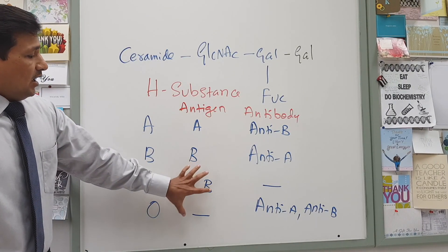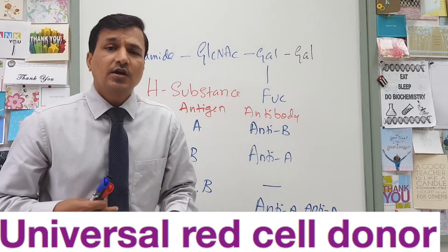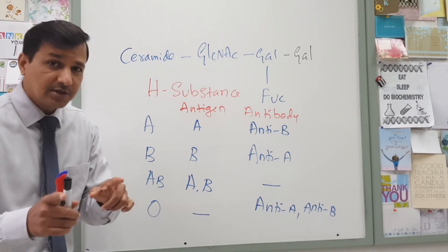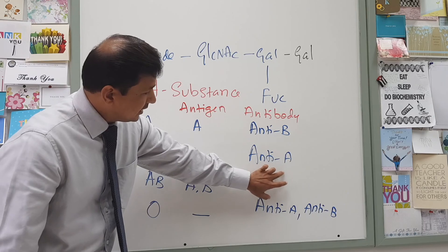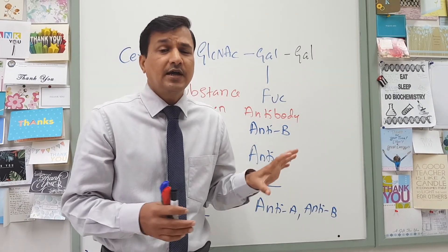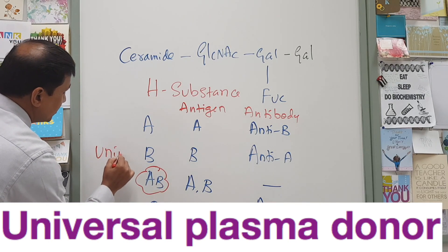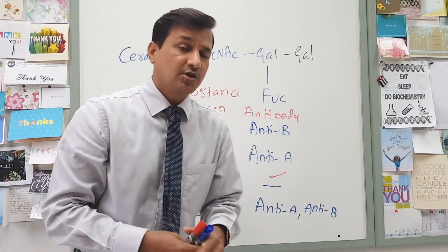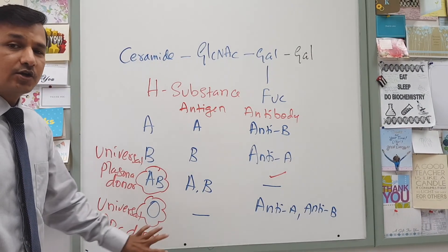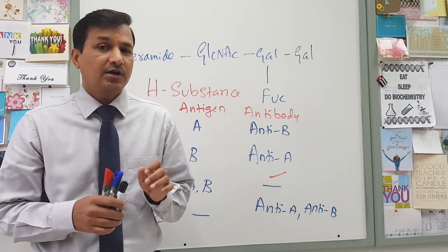O blood group — especially O negative — will act as a universal donor of red blood cells, because they do not have any antigen on their red blood cells. AB persons do not have any antibody in their serum, so they can donate their serum or plasma to anyone — AB blood group acts as a universal plasma donor. So AB person can donate plasma to any blood group, whereas type O negative person can donate RBCs to anyone.